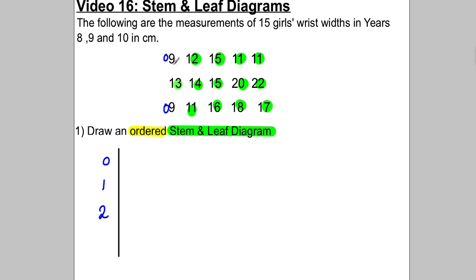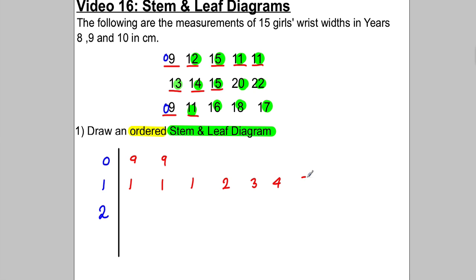Make sure you tick them off as you go along. Starting with the zeros: we have zero-nine, so put a nine there, and another zero-nine, so nine there. Then for the ones, the smallest we've got are 11s — so one, one, and one. Then we've got a two, a three, a four, a five, a five, a six, a seven, and an eight. And with the twos, we're going to have a zero and a two.